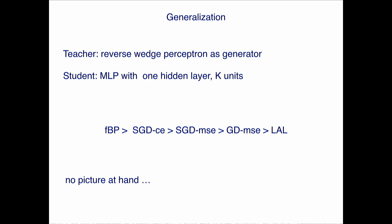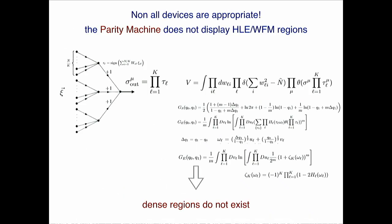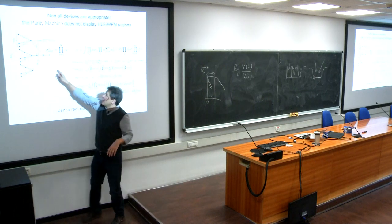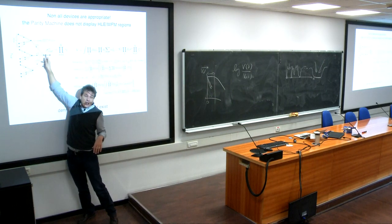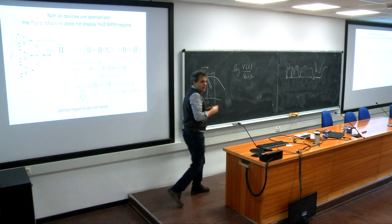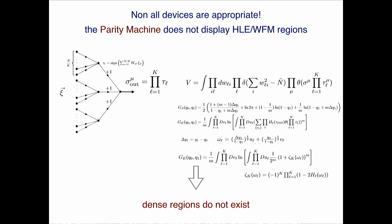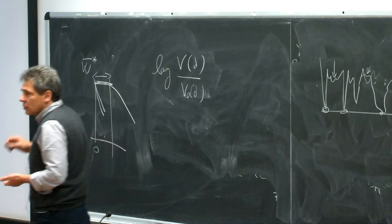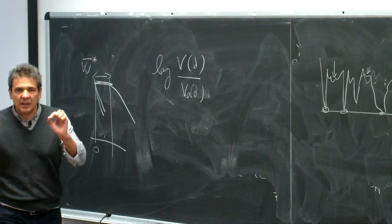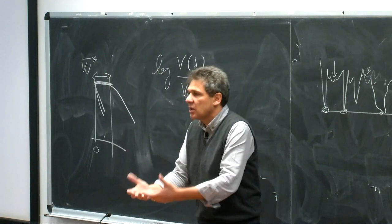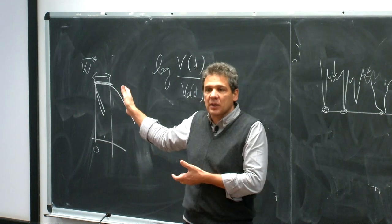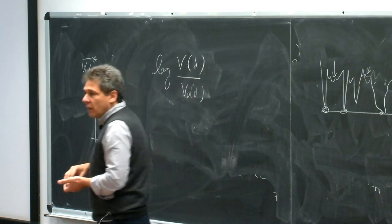To conclude this discussion: this is a particular property of systems that are threshold-sum machines. If you take a parity machine — where instead of a sum and threshold you take the product of hidden states as output — this machine does not display any flatness. It's well known you can do nothing with it for learning. You need a machine with the propensity to have wide flat minima, and the parity machine does not have this propensity.